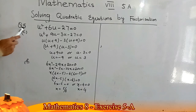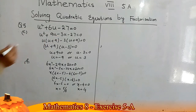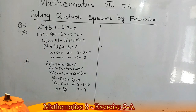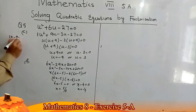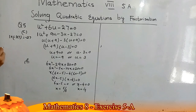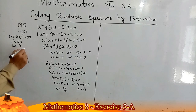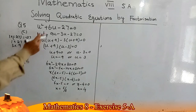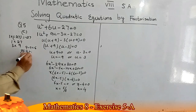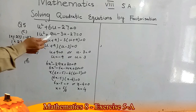Next, question number five part C: u² + 6u − 27 = 0. The equation is in standard form; the coefficient of u² is one. I will multiply the coefficient of u² by the constant term to get −27. The factors of 27 are 1 × 27 and 3 × 9. I select 3 and 9 because their difference forms the middle term and their product forms −27. I will use 9 and −3 as coefficients of u.